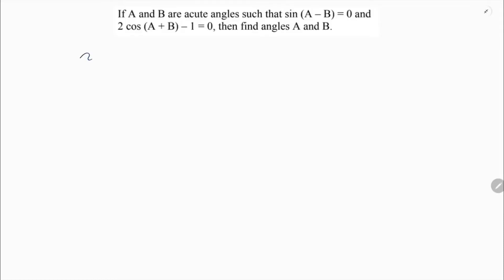Here sin(A-B) equals 0 and 2cos(A+B) equals -1 equals 0. So here 2cos(A+B) minus 1, if I transpose we will get plus 1. So cos(A+B) value is 1/2.